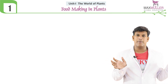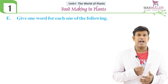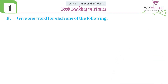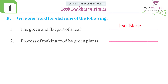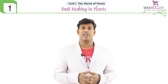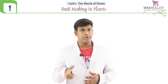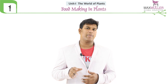Now we are going into one word answers. First — the green and flat part of a leaf is called: leaf blade. Second — the process of making food by green plants: photosynthesis. Third — the sugar made in the leaf is known as: glucose. That's all about our exercise part. You still have an activity, worksheet, and creative task to do with the help of your parents and teachers. See you in the next topic — bye!